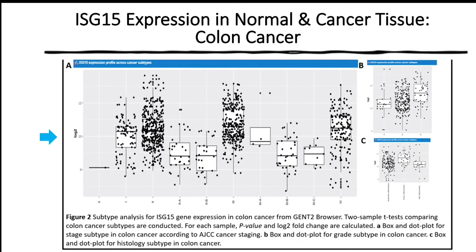Panels B and C show tumor grade and histology respectively. As tumor grade increases, the cells are poorly differentiated. Thus, the increase in gene expression as tumor grade increases and as cells are indicated as poorly differentiated is correlating. These findings suggest a pro-tumor function of ISG15 gene expression.